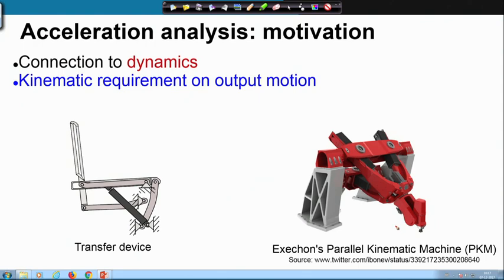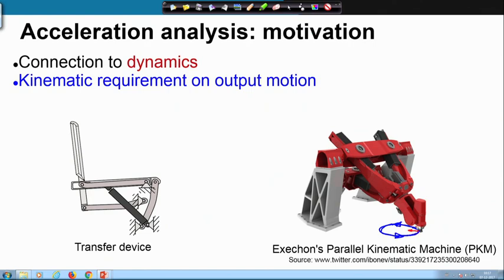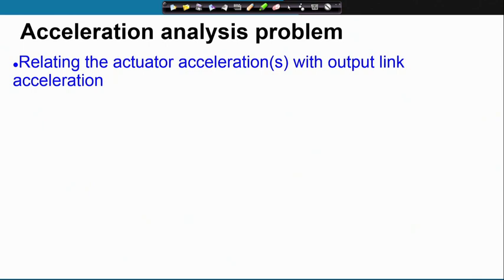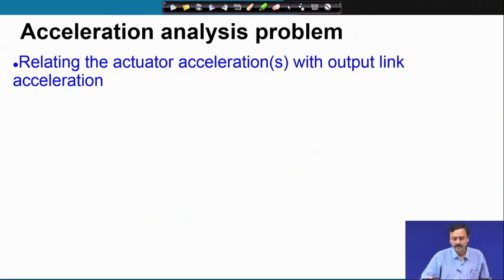Suppose I want to move the tool on a certain circular path at a constant speed. Even though the tool tip is moving at constant speed on a circular path, it has centripetal acceleration. So there must be certain acceleration at the actuator as well. What we need is to understand the acceleration input-output relation. The acceleration analysis problem is essentially relating the actuator accelerations with the output link acceleration.